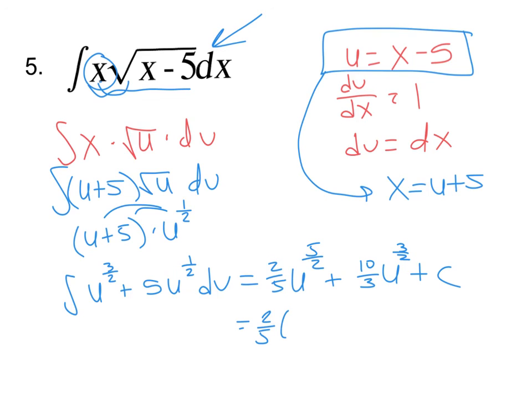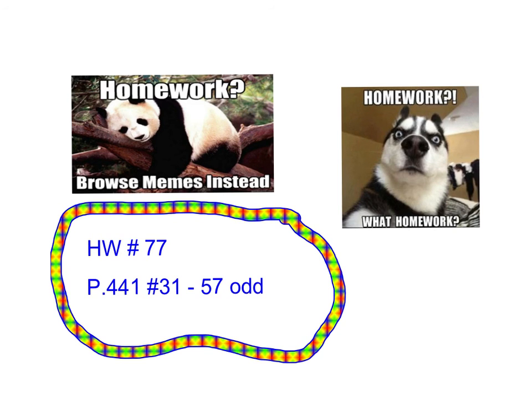So 2 fifths, x minus 5 to the 5 over 2, plus 10 thirds, x minus 5 to the 3 over 2, plus c. And that's it. This is a really specific problem. This is pretty much what they always look like. They don't change these up very much. It's usually one of them, there's a root, and then that same variable on the outside. So this is a really specific problem, but it does pop up a lot. It's an important one to be able to know. Alright, homework. 31 through 57 odds. So work on that now. And then we're going to finish it for homework.